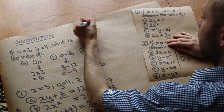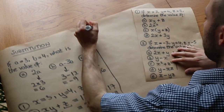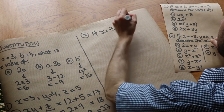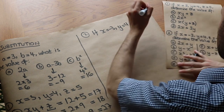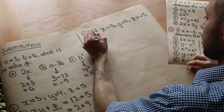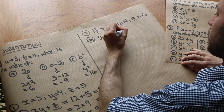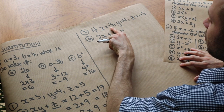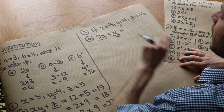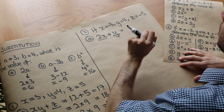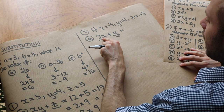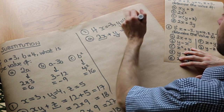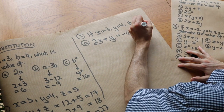Now this is where it gets slightly harder, because we're going to deal with negative numbers. We've got x is minus 3, y is 4, and z is minus 5. What is 2x plus y? We've got 2x: what's 2 lots of minus 3? A positive times a negative is a negative, so it's minus 6. Put the plus symbol in between, and then y is 4. Minus 6 plus 4 is minus 2.